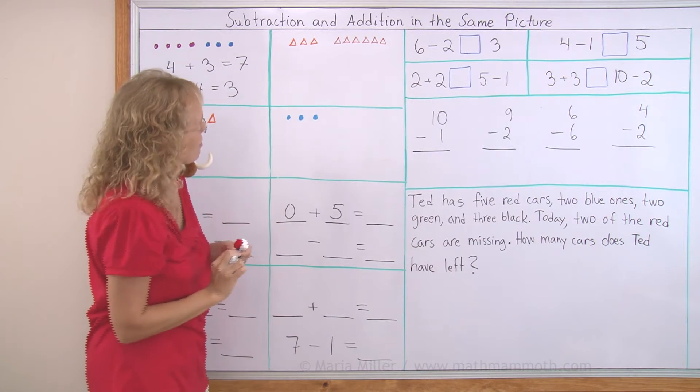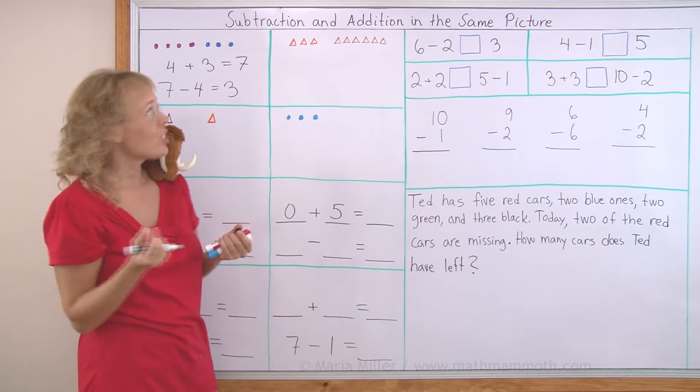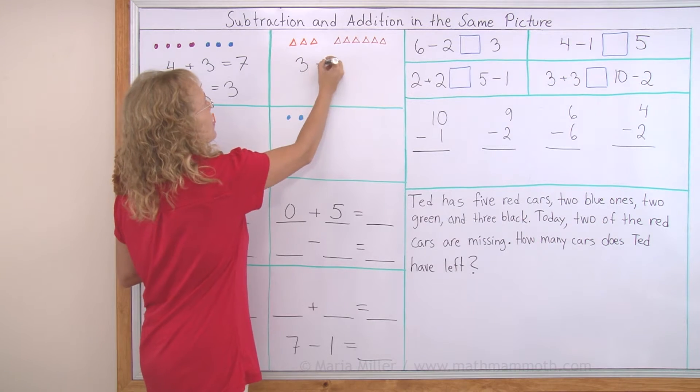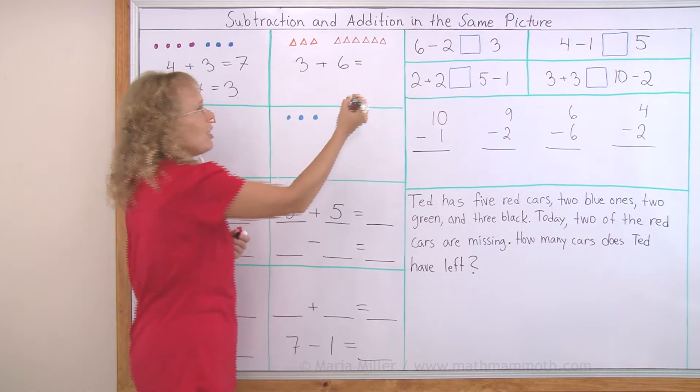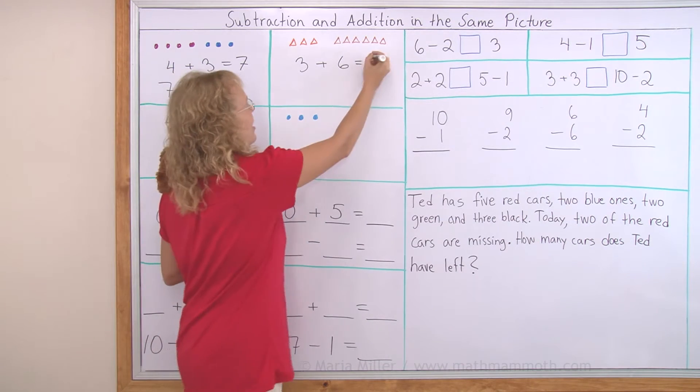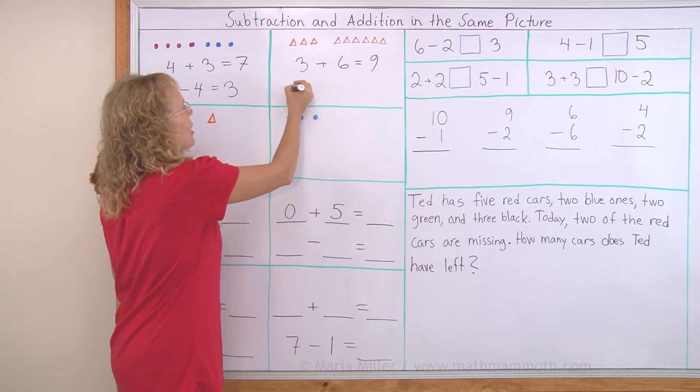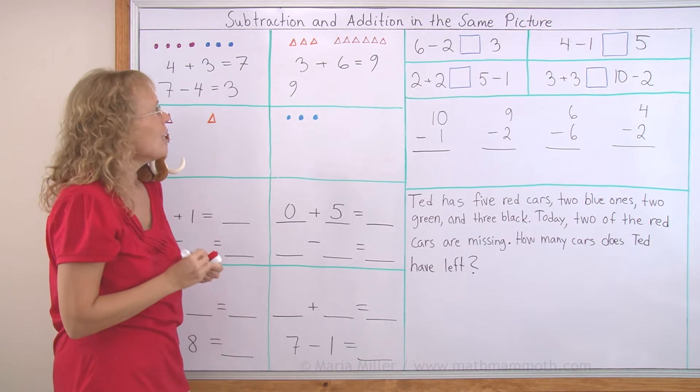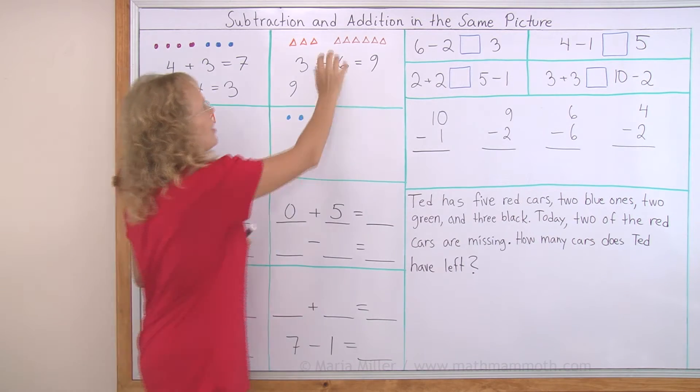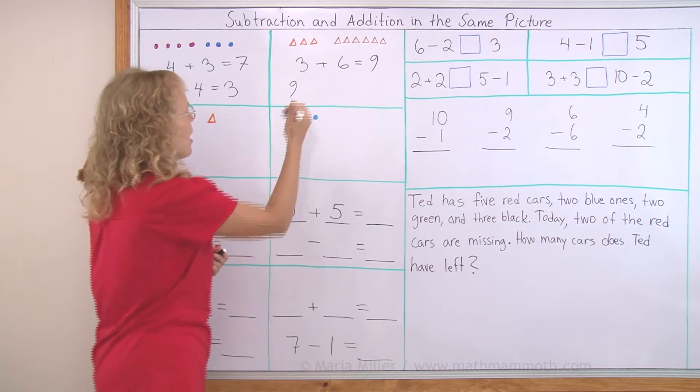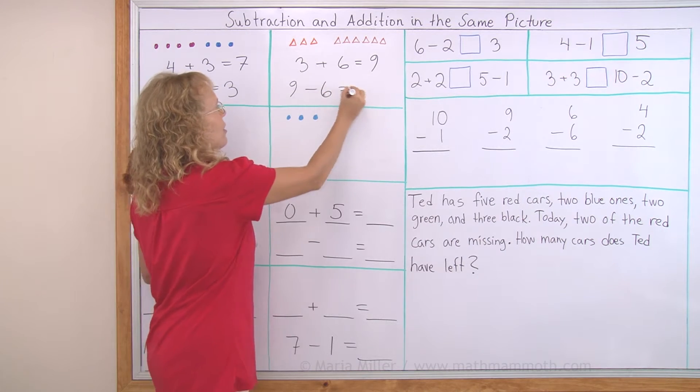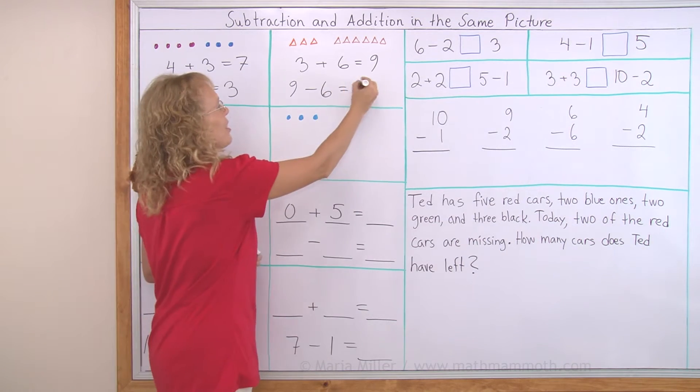From this one we have first an addition. 3 + 6 = how much? You should know, it's nine. And then the subtraction starts with how many we have in the beginning. We have nine in the beginning. And then some of those go away. Let's say that these six go away. So 9 - 6. And how many are left? Three. You see it in the picture.